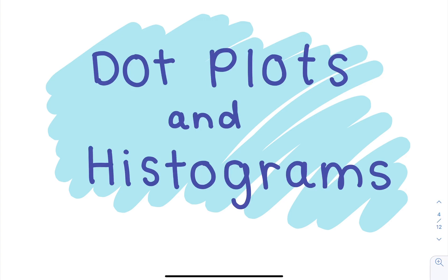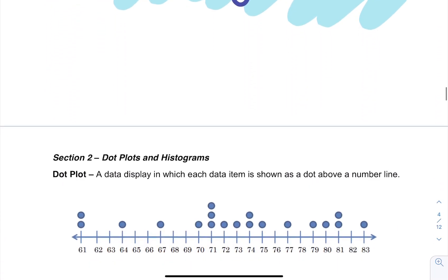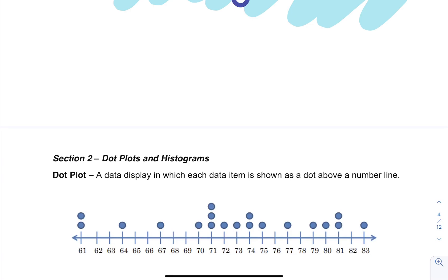In this video we're going to be learning about how to use dot plots and histograms to display data. So to start, a dot plot is a data display in which each data item is shown as a dot.